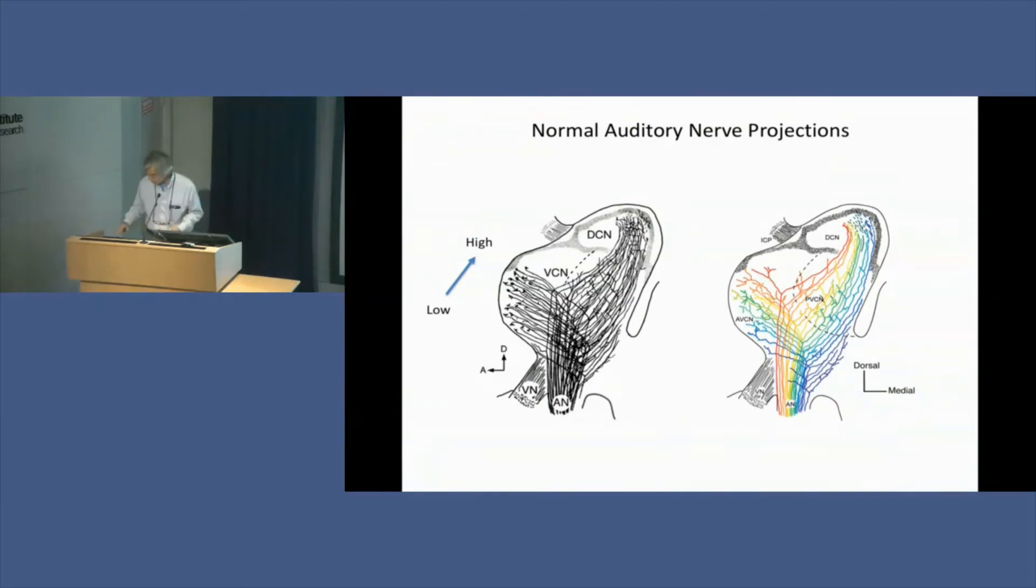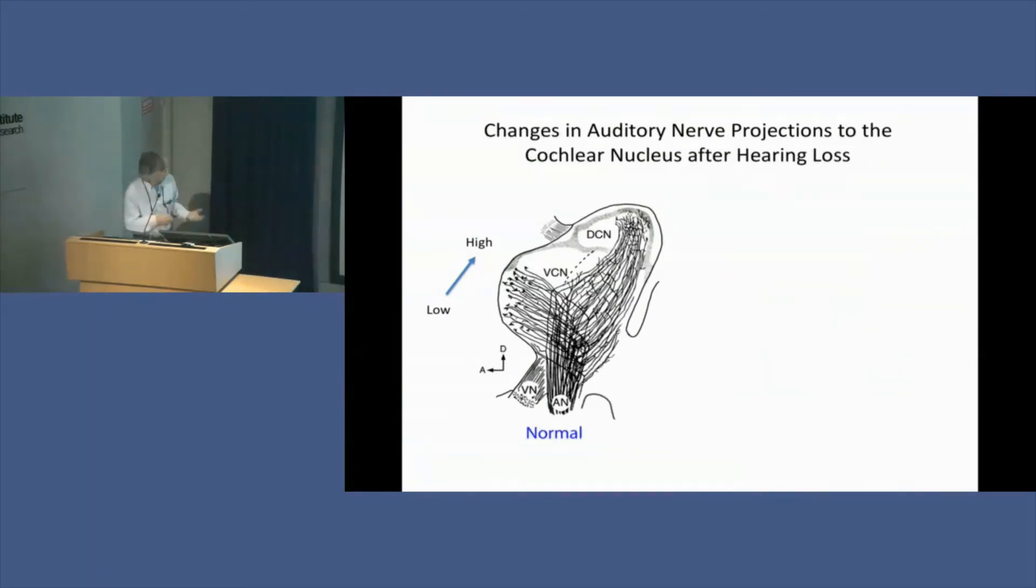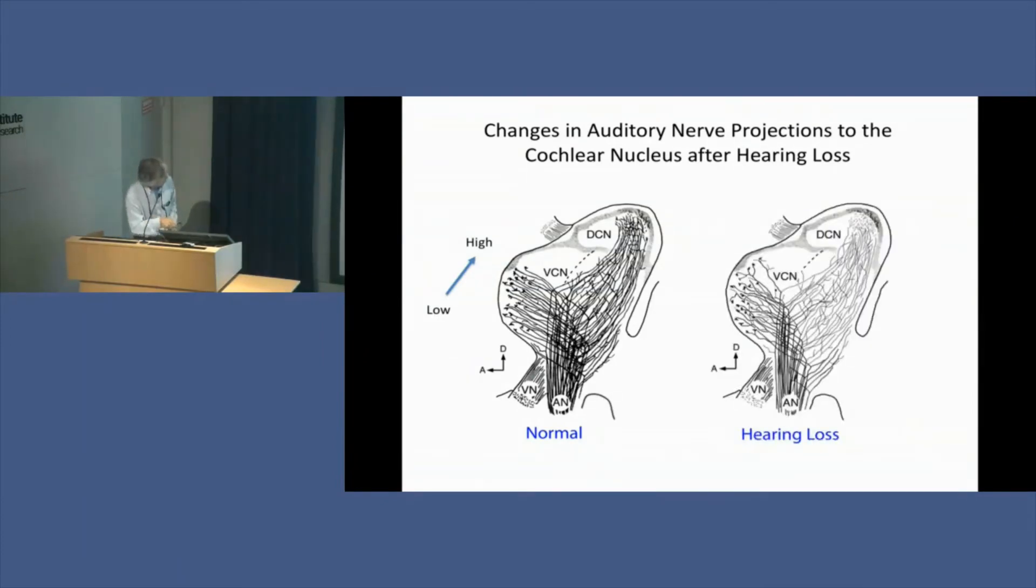With hearing loss, we can see that the innervation is less dense, but it's also a little bit more meandering. The precision of the projections aren't quite as good as they were with normal hearing. It's like if you strike a piano C but the piano plays E sharp or something. This confuses the brain. The brain will have a harder time understanding speech when this process is in place.